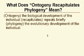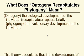Ontogeny — what does that mean? That means the biological development of the individual. Recapitulates means repeats briefly. Phylogeny is the evolutionary development of the individual.